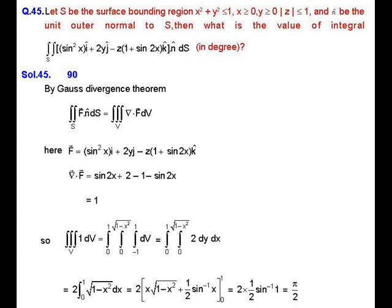Now we set up the limits for this triple integral over the one-fourth part of the cylinder where x and y are both positive and z lies between minus 1 and 1. The limit for z is minus 1 to 1, the limit for y is 0 to √(1 − x²), and x varies from 0 to 1. When we solve this triple integral, its value is π/2, which in degrees is 90. So 90 is our answer.